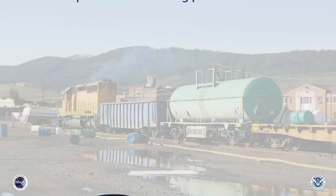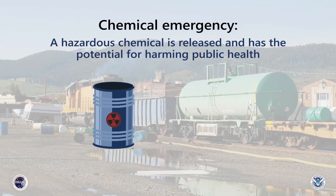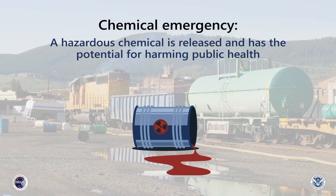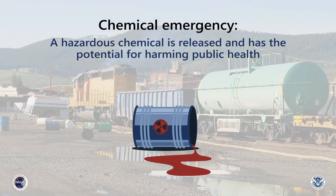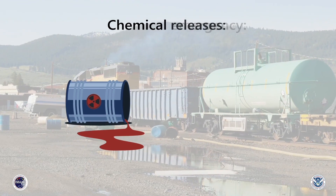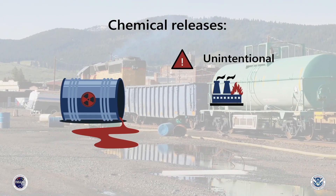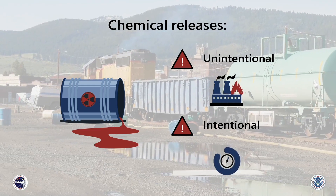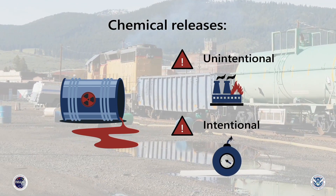A chemical emergency occurs when a hazardous chemical is released and has the potential for harming public health. Chemical releases can be unintentional, like ones resulting from an industrial accident, or intentional, like those resulting from a terrorist attack.